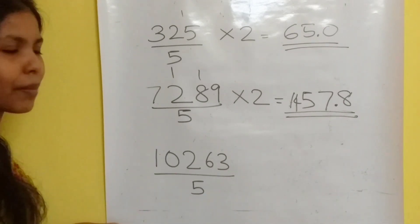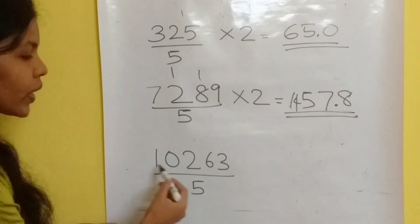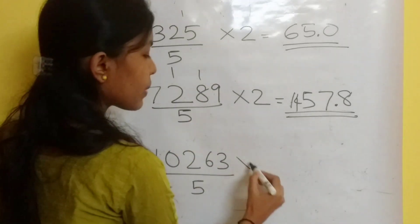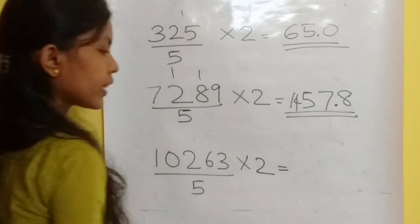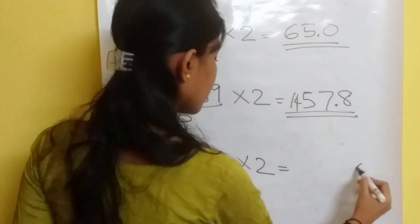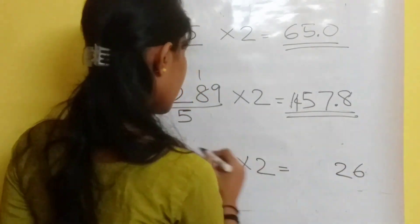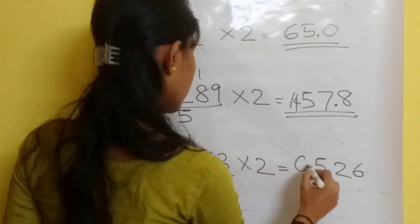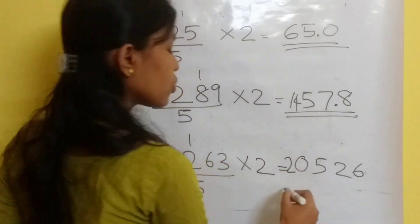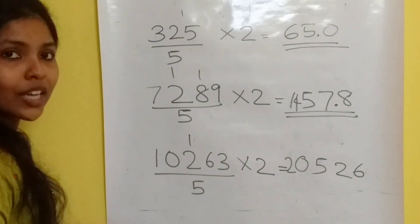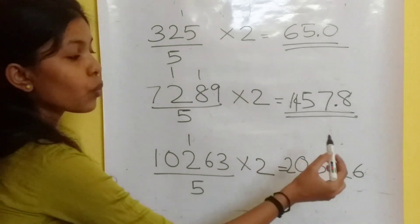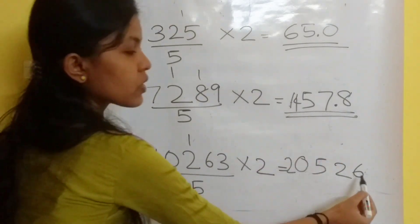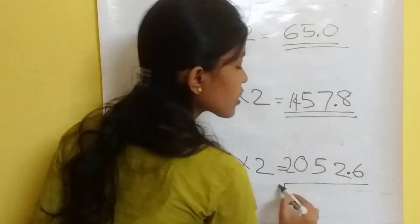Now let's take a 5-digit number: 10263 divided by 5. Same step — multiply by 2. 3 into 2 is 6, then 12, 4 plus 1 is 5, 0, 1 into 2 is 2, giving 20526. There should be only one digit after the decimal place, so the answer is 2052.6.